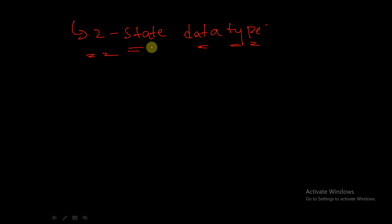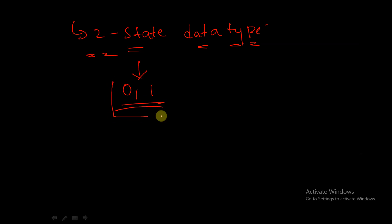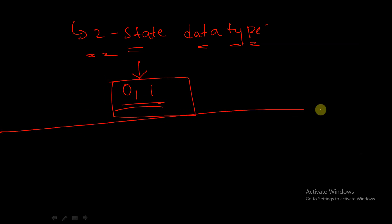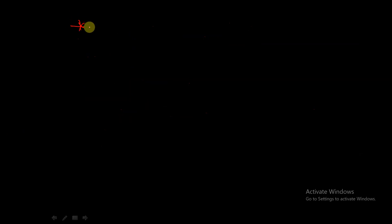A two-state data type can only store two values: zero and one. That is why it is called a two-state data type. Now let's discuss the logic data type in detail.